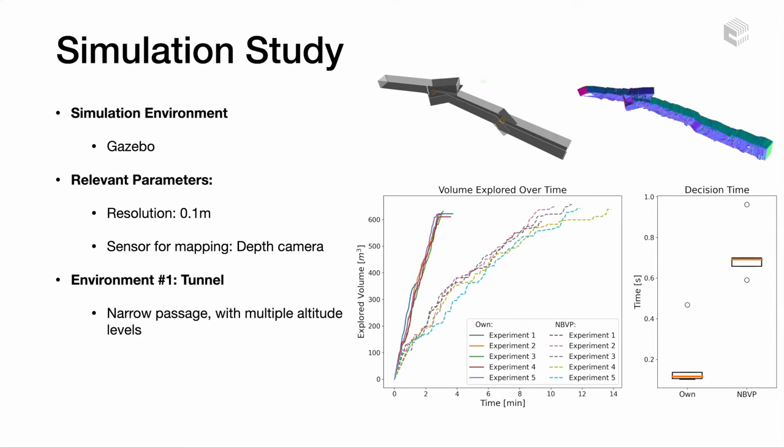The first scenario chosen to test the planner is a multi-level tunnel. It can be seen from the results in the figure below that our algorithm explores the tunnel more than three times faster, with an average time of three minutes. The reason for that is because the optimized yaw angle and potential gain ratio improve the quality of the sampling phase.